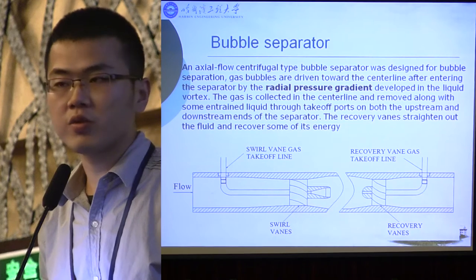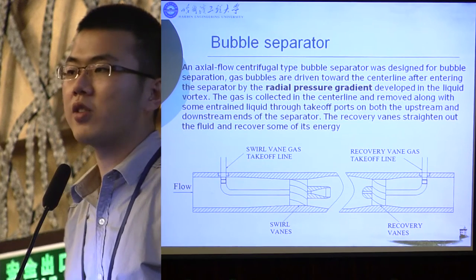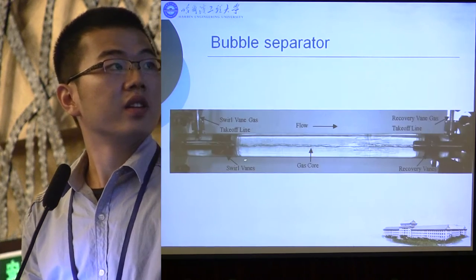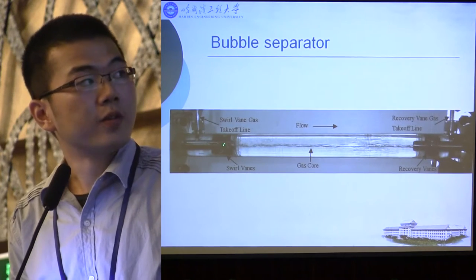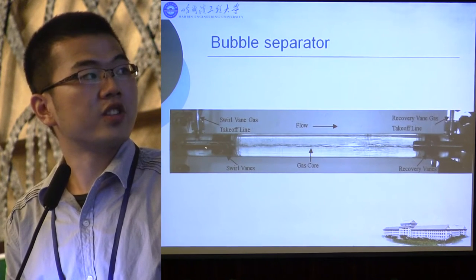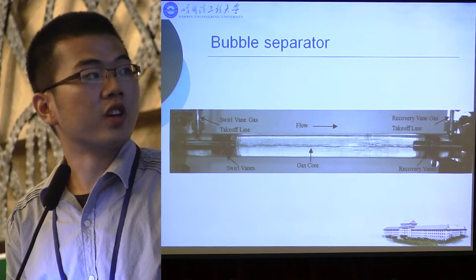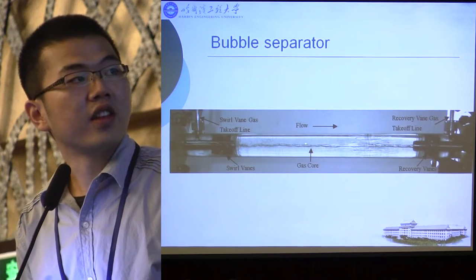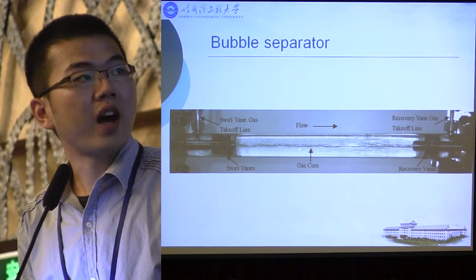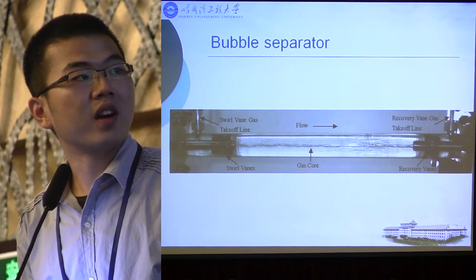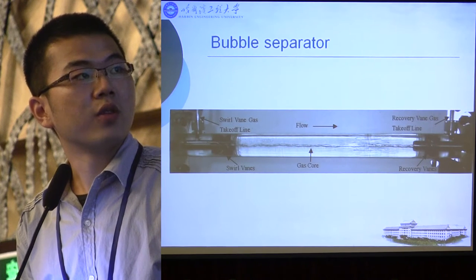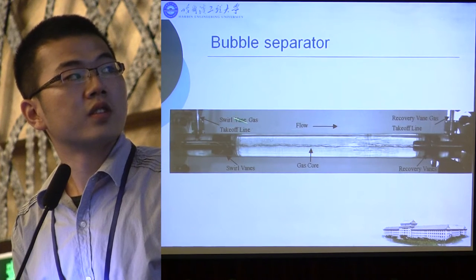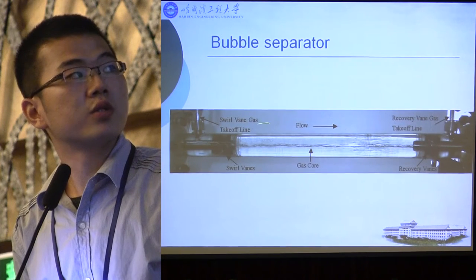The recovery vanes straighten out the fluid and recover some of its energy. We can see that when the fluid passes through the swirler and enters the separator, the bubbles gather at the center of the pipe to form a gas core, which is then removed through the two takeoff lines.